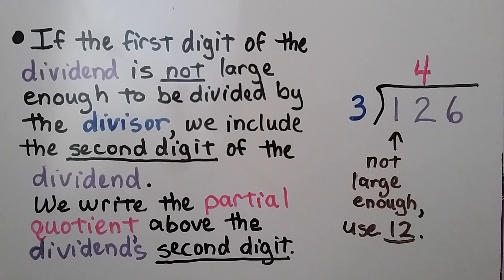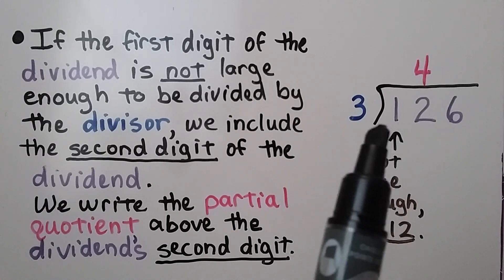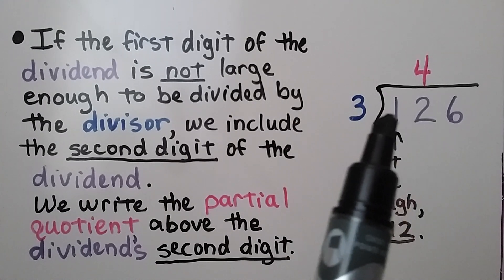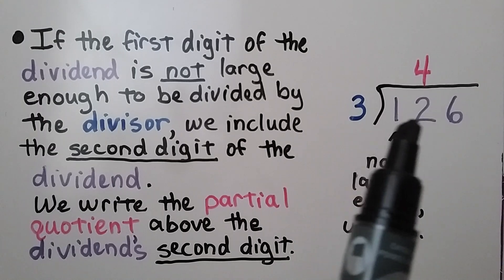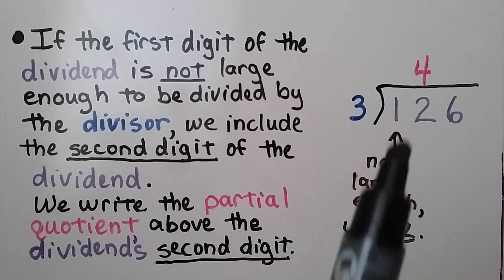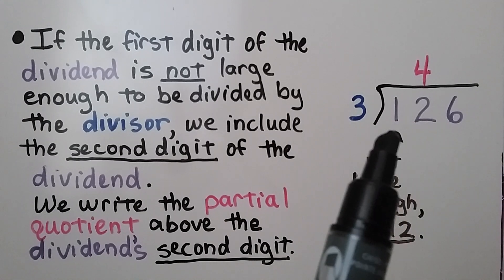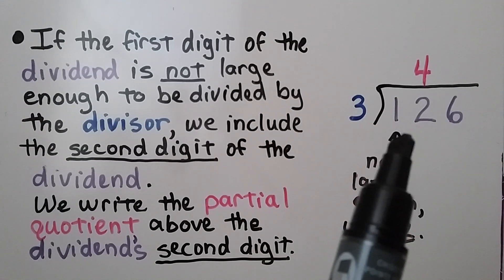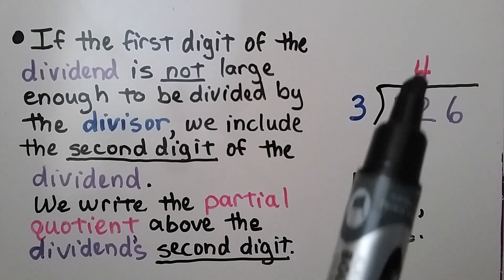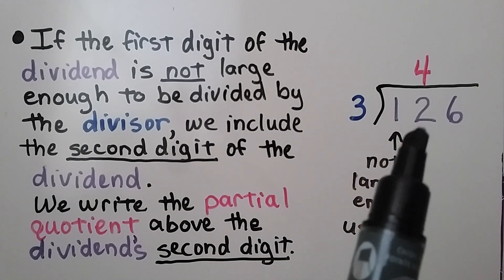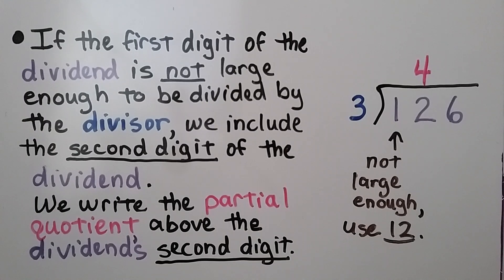If the first digit of the dividend is not large enough to be divided by the divisor, we include the second digit of the dividend. For example, three will not fit into one, so we look at the first two digits as a twelve. Three fits into twelve four times. Because we're using both digits, the four — our partial quotient — will go above the second digit. We write the partial quotient above the dividend's second digit when we're using the first two digits.